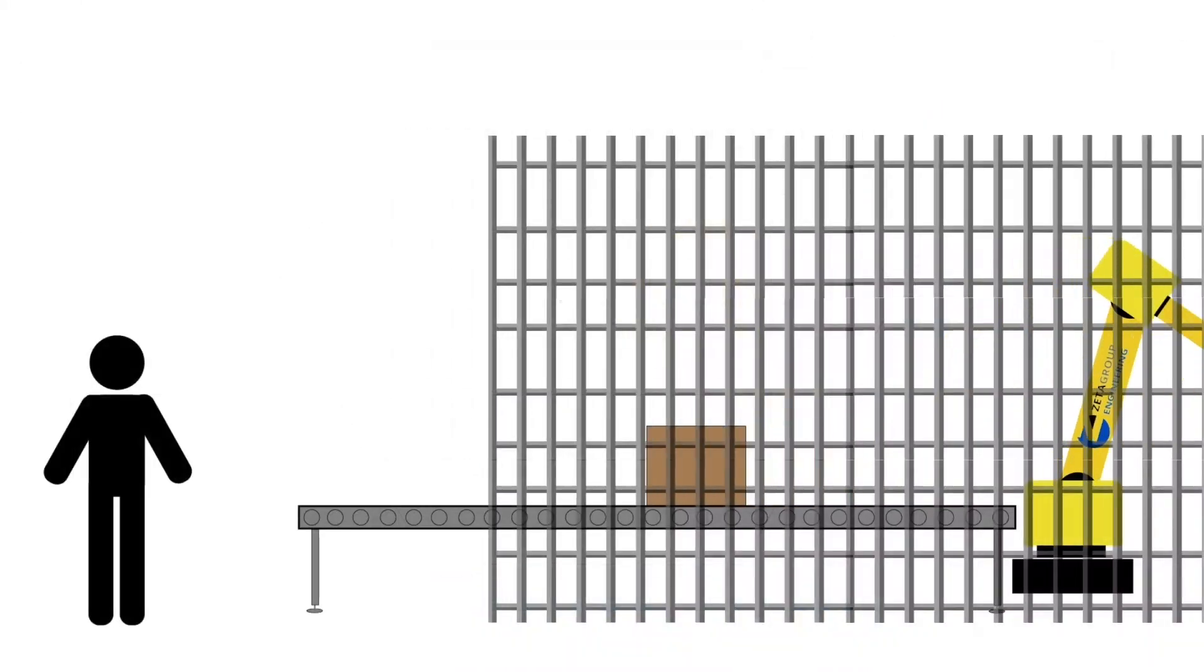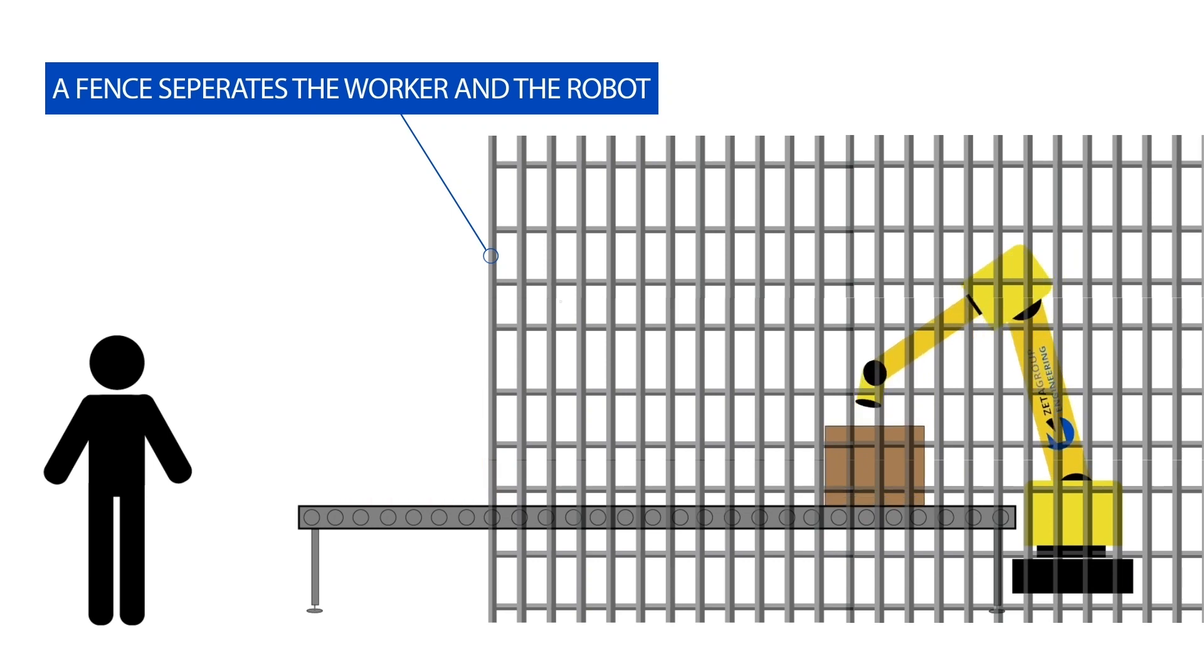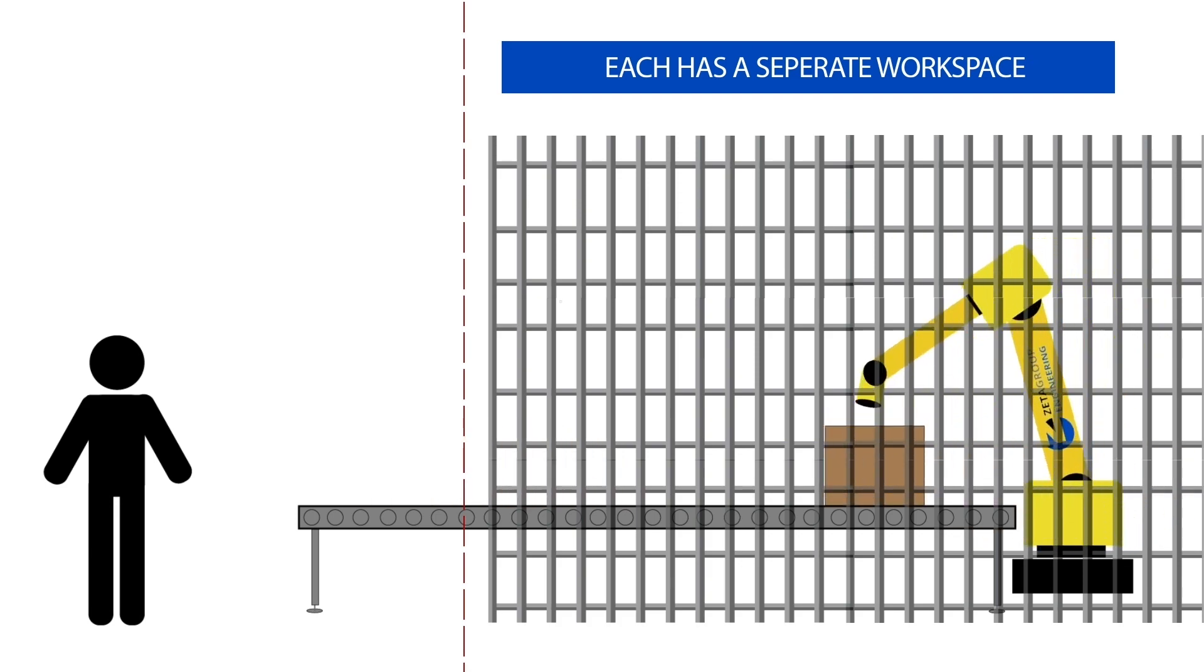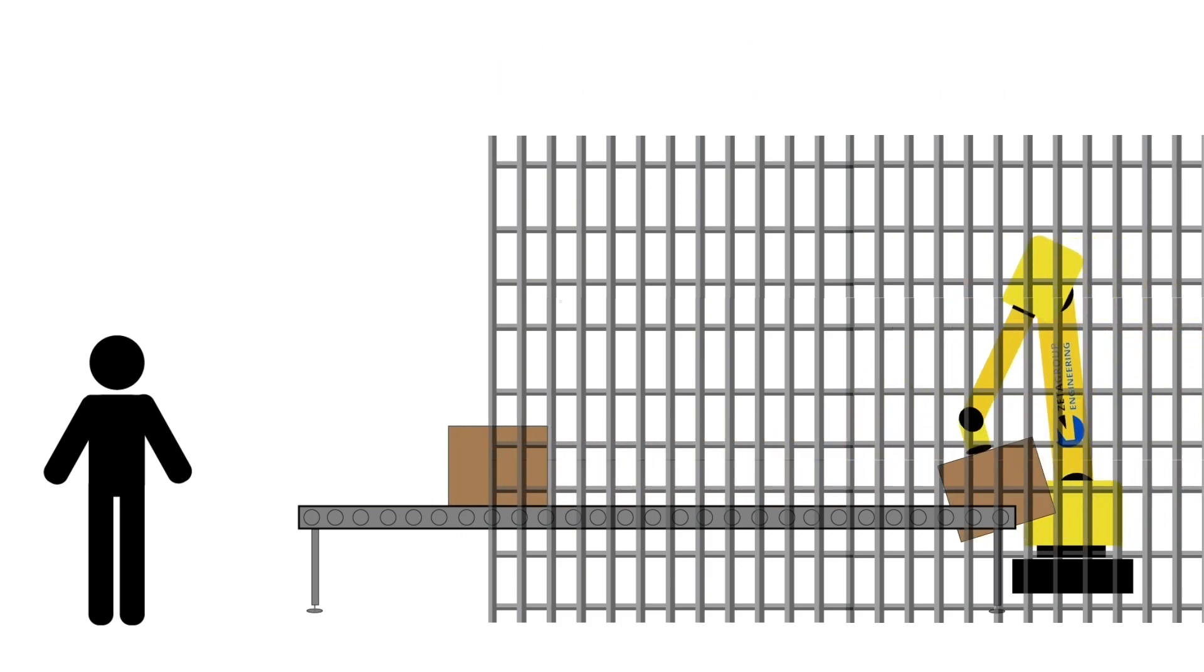Fenced robot. In this level of collaboration, a fence separates the worker and robot. They each have their own workspace and the worker cannot enter the working zone of the robot without the robot being stopped.